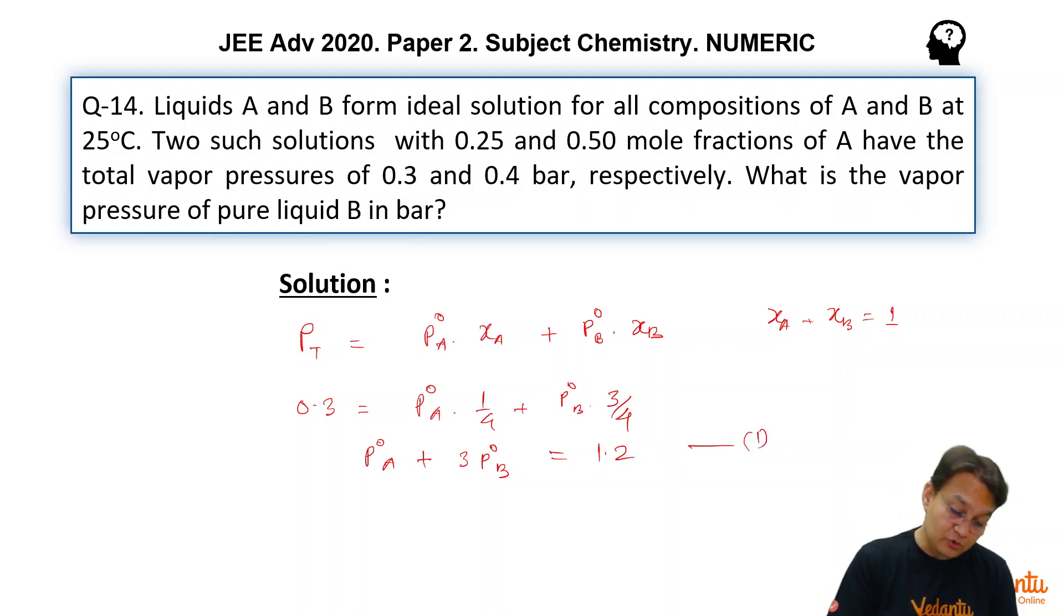Similarly, equation number 2: 0.4 equals p⁰A times half plus p⁰B times half. So it gives you p⁰A + p⁰B equals 0.8. Let us call this equation number 2.